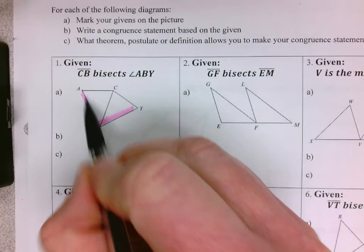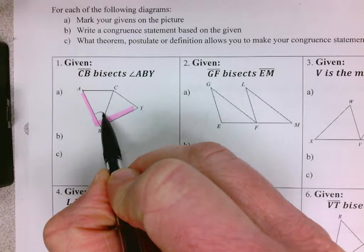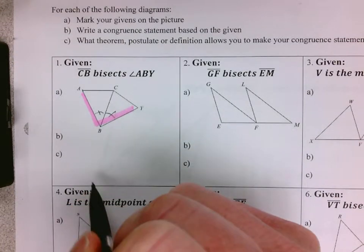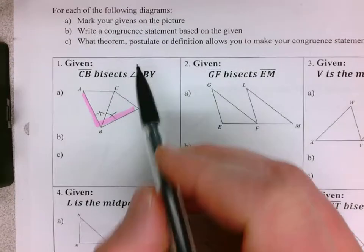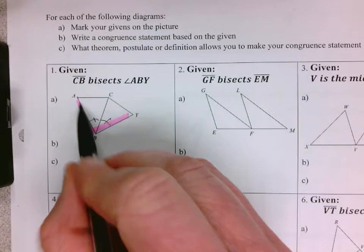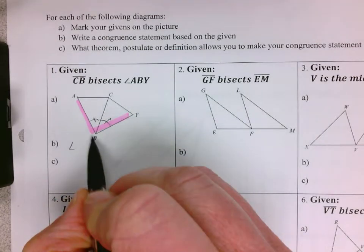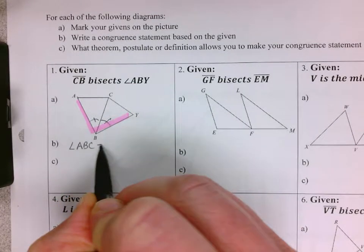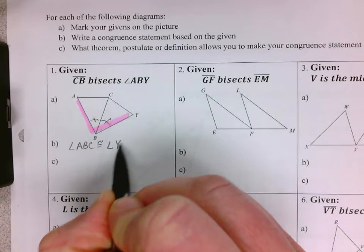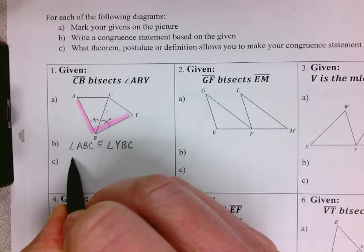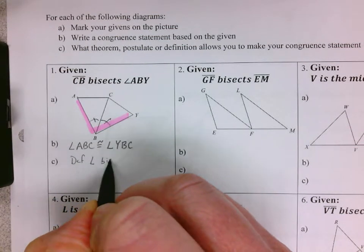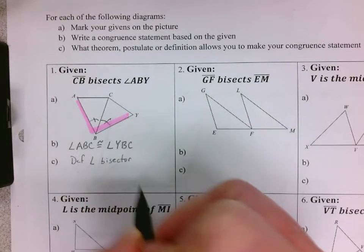The directions say mark your givens on the picture, write a congruence statement based on the givens. So the congruent statement would be angle ABC is congruent to angle YBC, and the reason is definition of angle bisector.